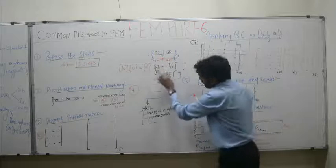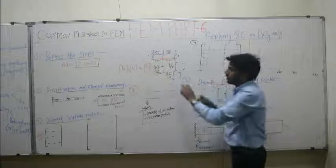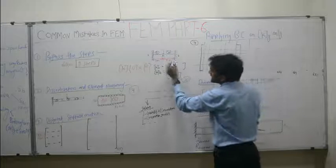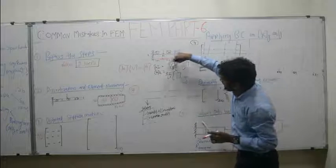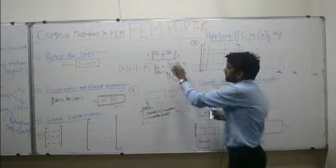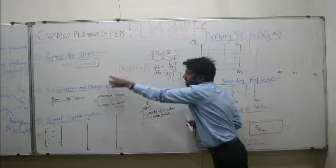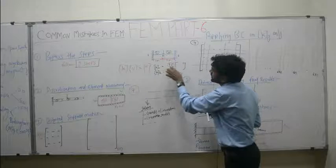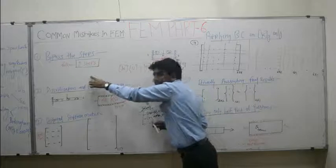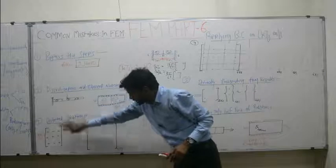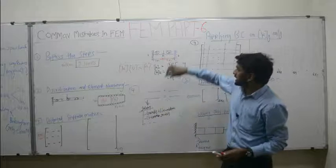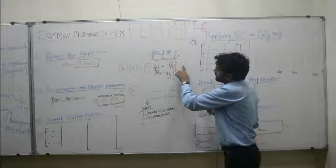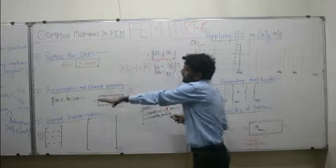This means that while assembling the local stiffness matrices into the global stiffness matrix, when you export each element from the local matrix to the global matrix, you need to multiply the constant EI/L³ with each and every member of the local stiffness matrix before importing it to the global stiffness matrix. Always make sure that each time you are multiplying the constant EI/L³ with each and every member of the local stiffness matrix while assembling the global stiffness matrix.